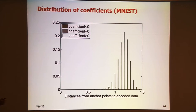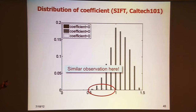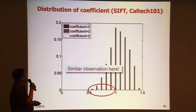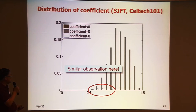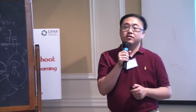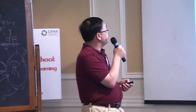We observe similar things for sparse coding on SIFT features. When you achieve good performance on image classification on Caltech 101, this shows that the activated bases are actually very close to the encoded data point — meaning the sparse coding, in this case, is local. This helps explain why sparse coding works. If it's not local, the result may have some stability issues.